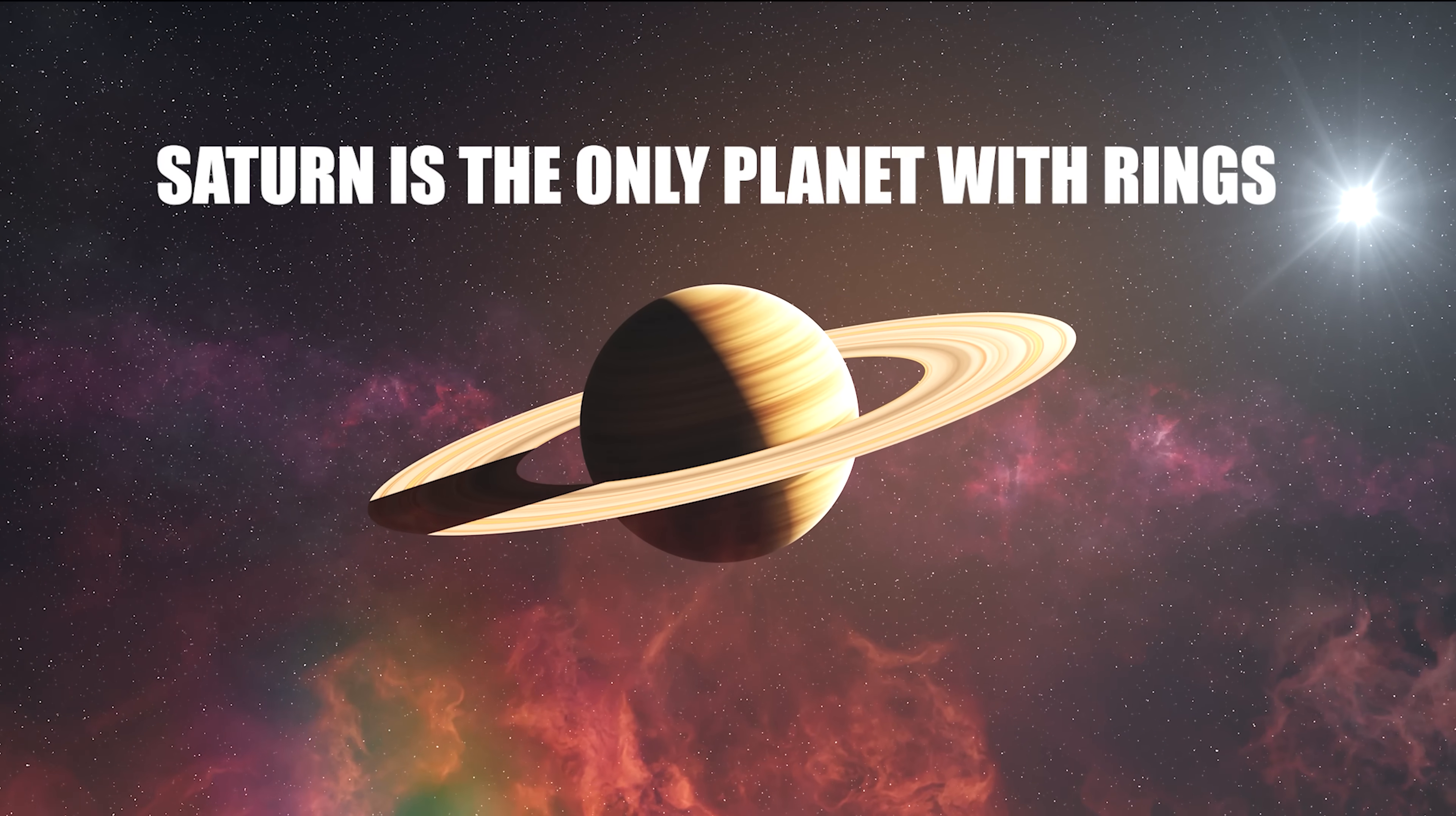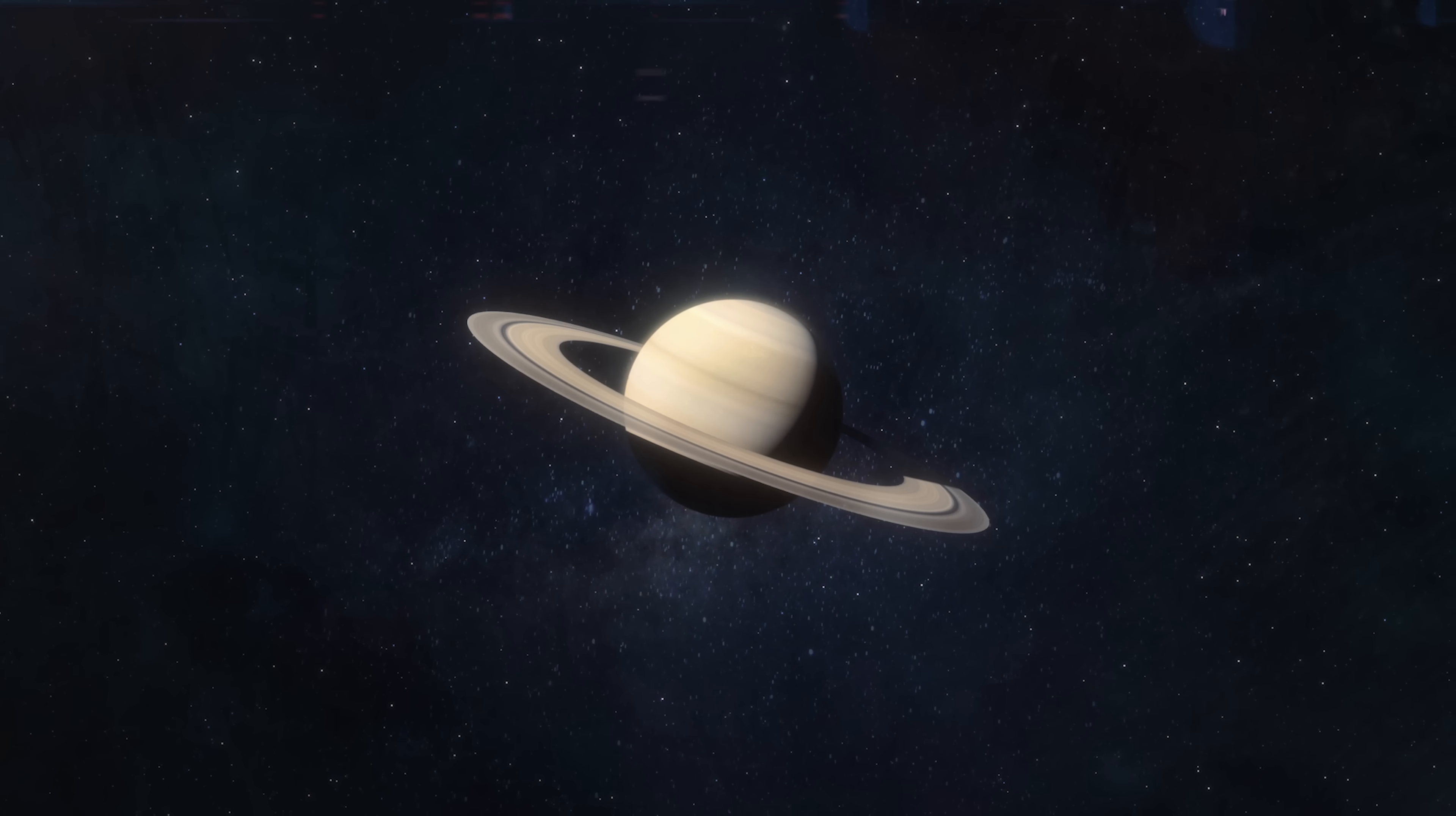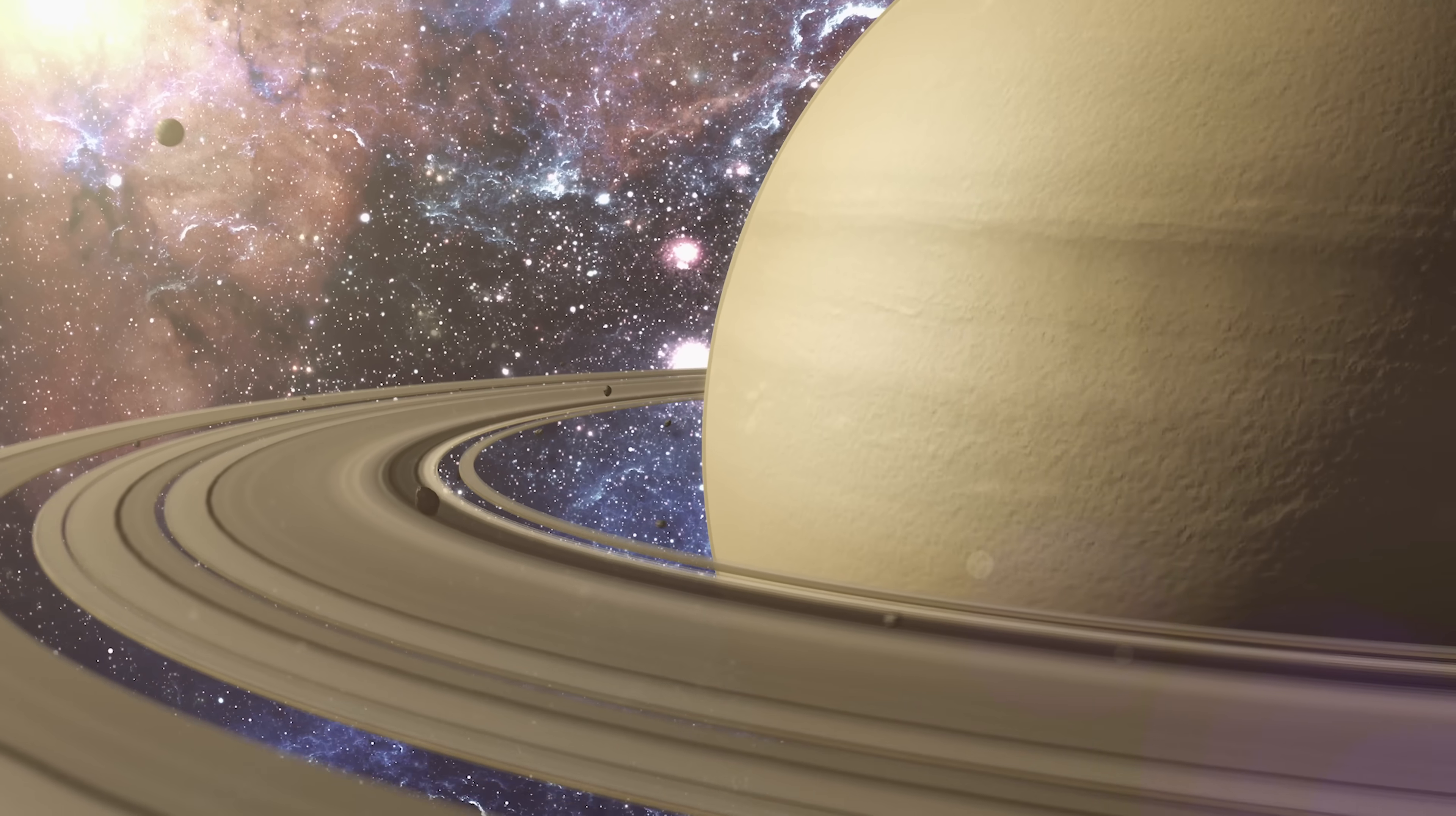Saturn is the only planet with rings. Saturn and its magnificent rings are probably the most iconic image of the solar system after Earth seen from space. When you think of planets with rings, it's natural to think only of Saturn. It's the star, the most photogenic planet, the one that makes even kids go, wow.